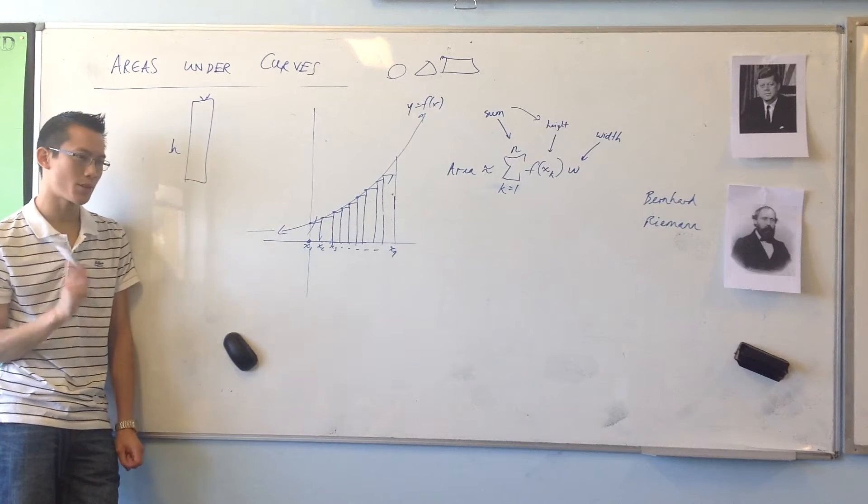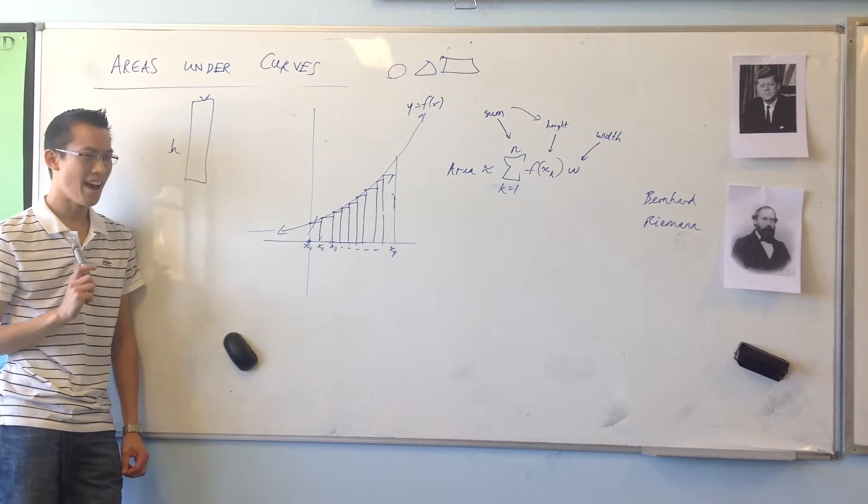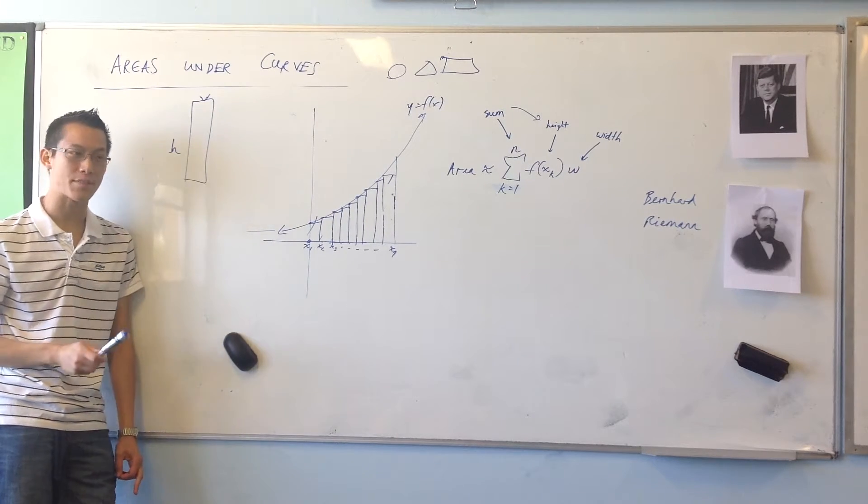Now, Riemann was smart, and he was not just smart, he was a mathematician. Mathematicians, I've talked about this, are different, very different from, say, physicists.